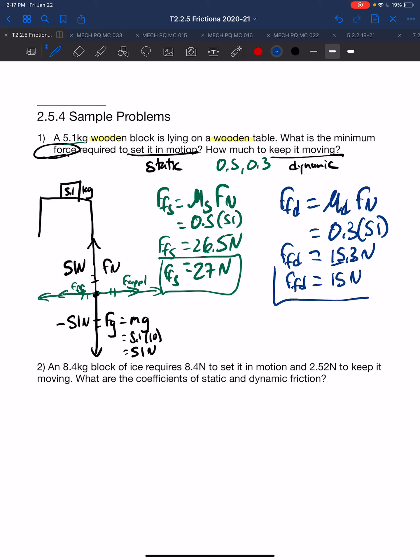The uncertainty in both of these values lies in the one's place. So this one could be 16 or 14, and the other one, the static, could be 28 or 26. These are the forces necessary to keep it moving and to start it moving. So that is our first sample problem.